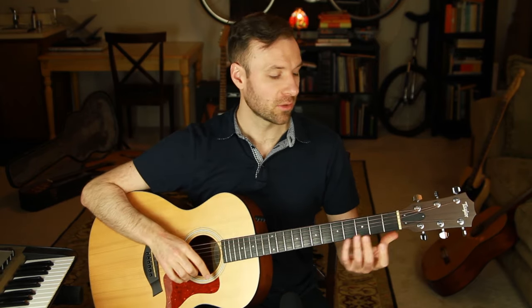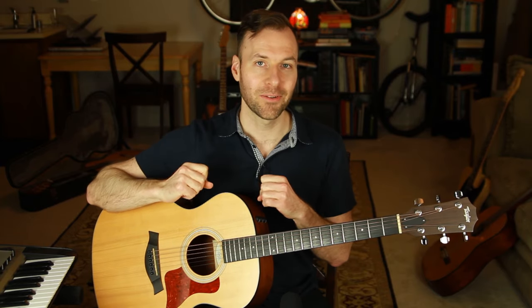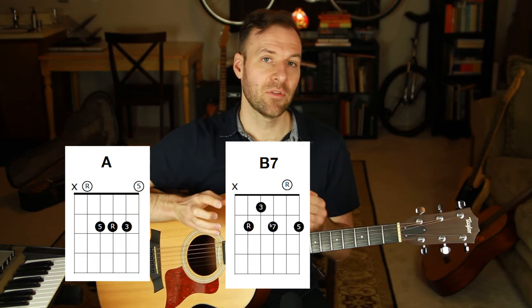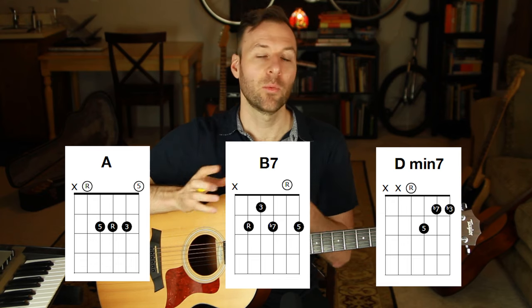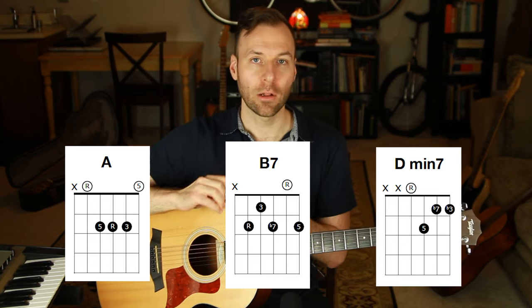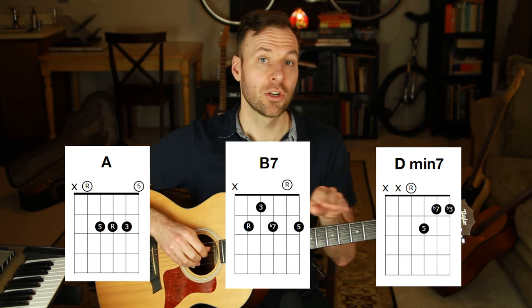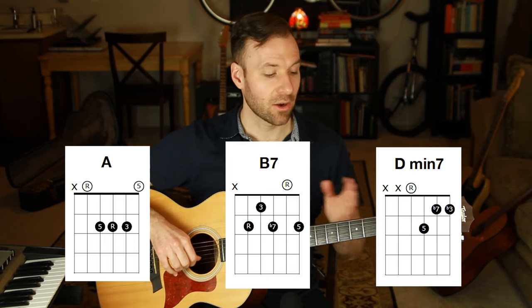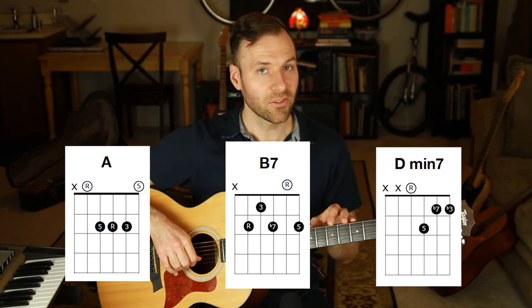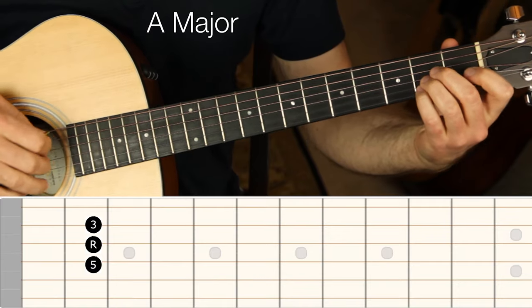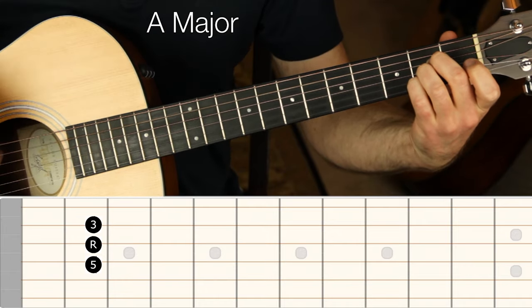What I just did — moving notes around to find different voicings of the same C chord — is exactly what you're going to be doing now. Let's go through more examples. We're going to take three common open-string chord shapes — A major, B7, and D minor 7 — and explore new voicings for all of them using this process. These three chord shapes and tons more are in my free chord chart, called 'Chords with Color' — definitely check it out.